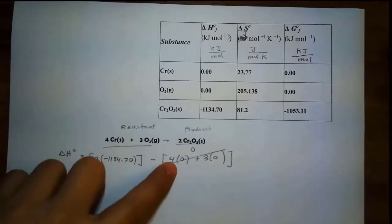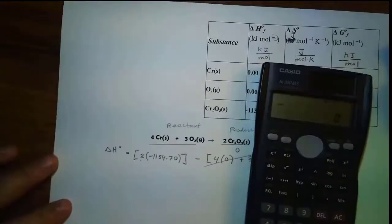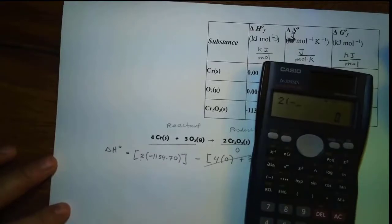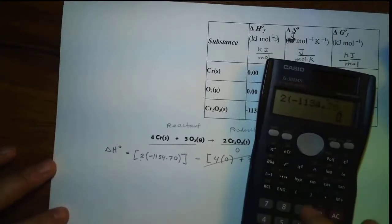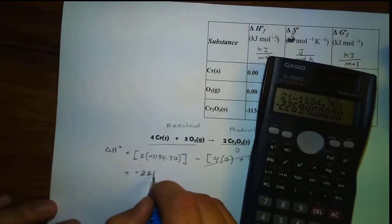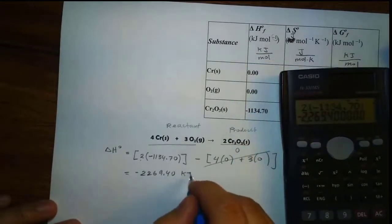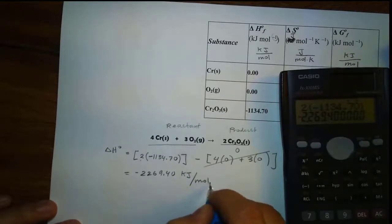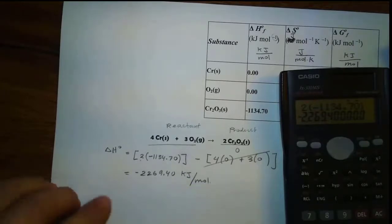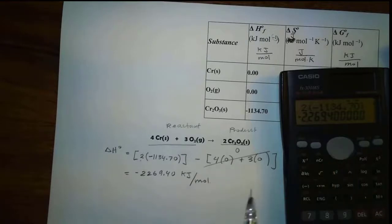Anything minus zero is equal to itself. So I just plug into the calculator: 2 times negative 1134.70, and we get our answer equal to negative 2269.40. The unit is kilojoule over mole. That's for delta H, and what does negative delta H tell you? We have a negative Q — this is an exothermic reaction, meaning we are releasing heat.